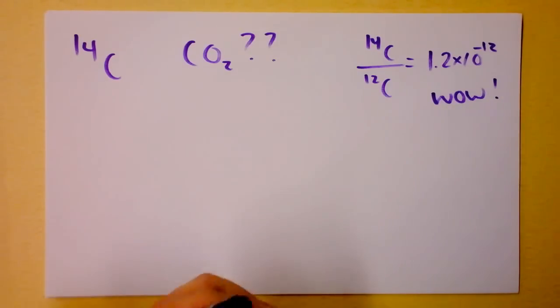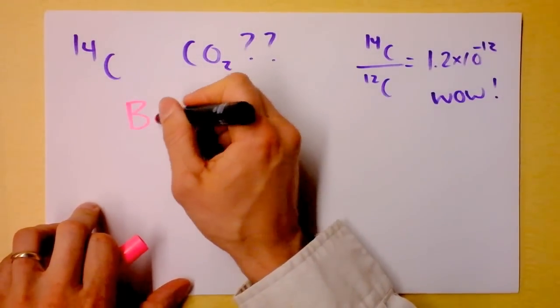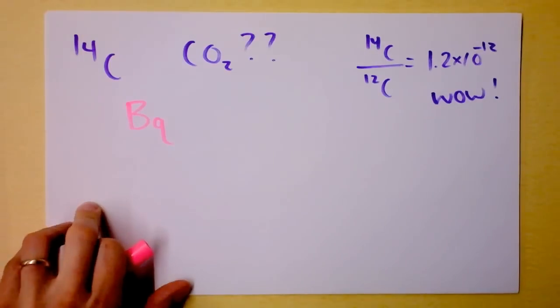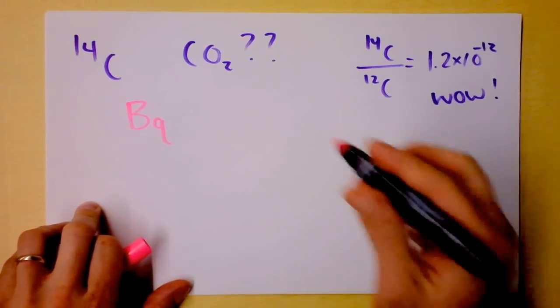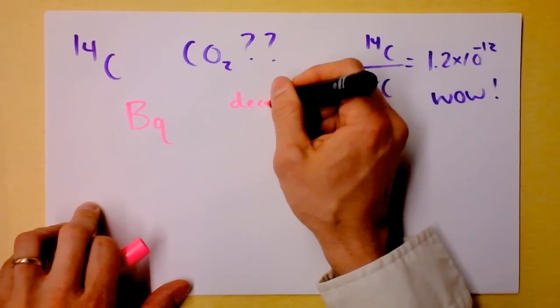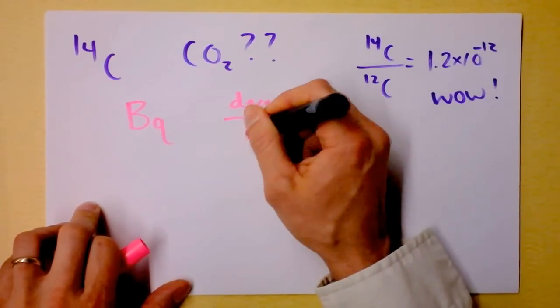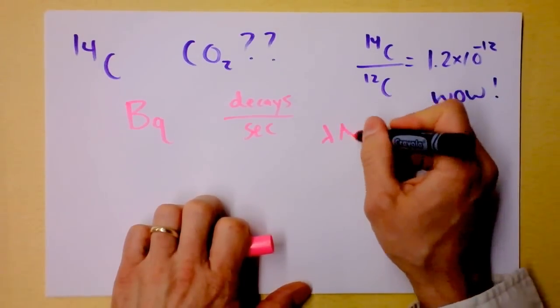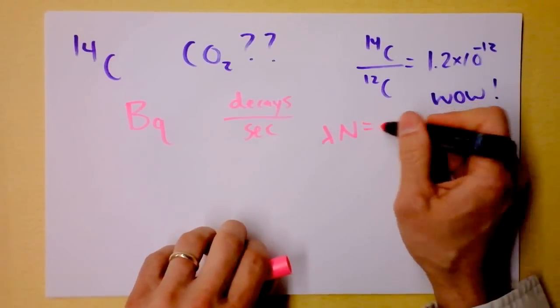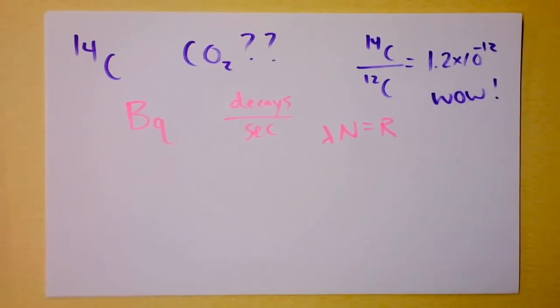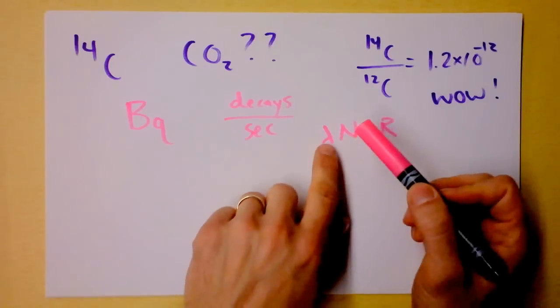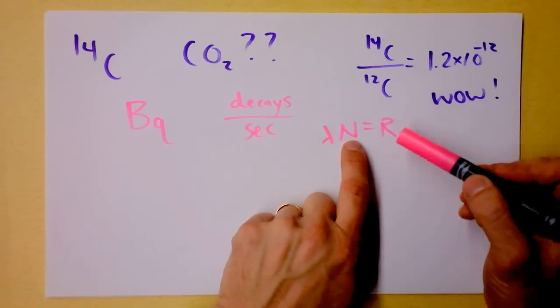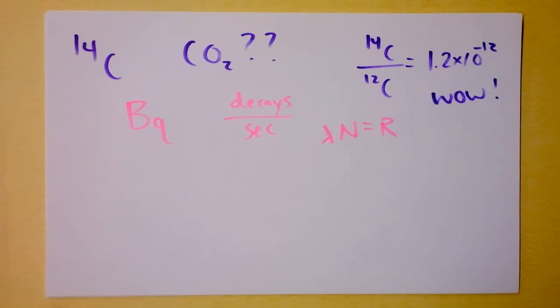The other thing that you need to know is that a becquerel is a unit of activity. And it's, well, it's sort of a decay thing, and it's in, actually, decays per second. And so that, I guess, means it's lambda times N. That's what activity is. That's what we're going to call R, the decay rate. So it's the decay constant times the amount that we've got at that time, and that's going to give us the decay rate.